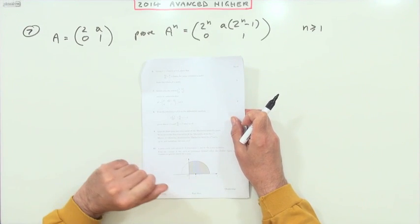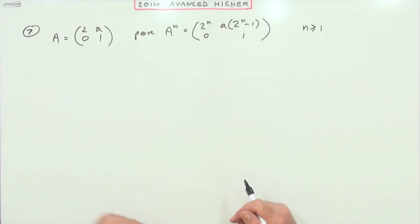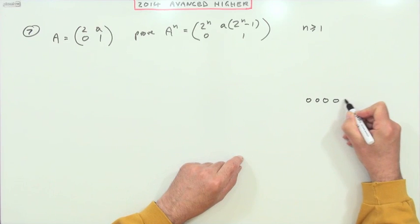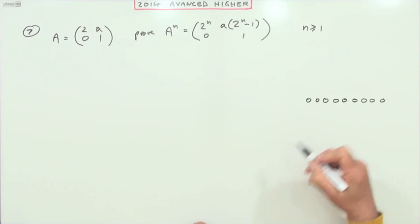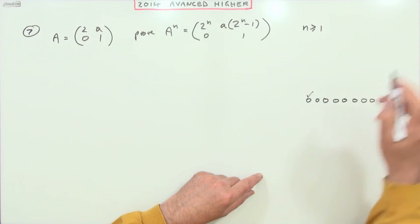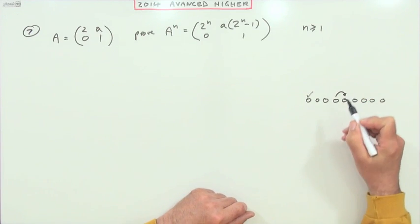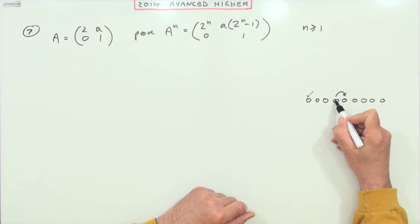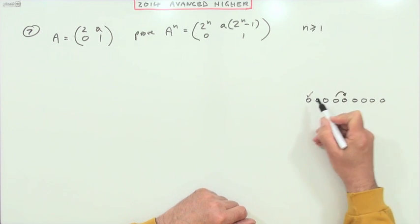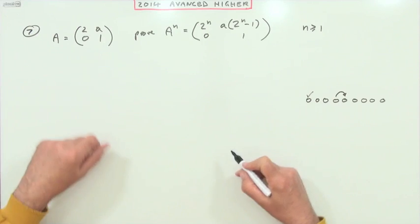Number seven from the 2014 advanced higher proof by induction with matrices. Two important things to remember with proof by induction: if you have a series of statements, you're required to prove it's true at the first of them, and then prove that the link connecting two of them holds. That is, if it's true at a particular one, then it will be true for the following one. Then you can use that link to start at the first one and continue all the way through. So the first part is prove it's true.